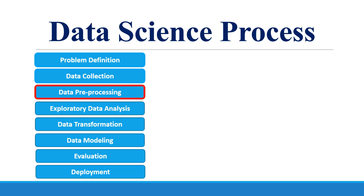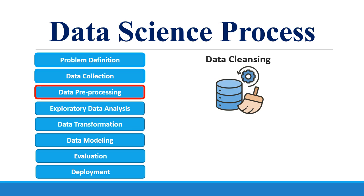Once you collect the data, the next step is data preprocessing, which involves data cleansing. When you collect the data in raw format, there are a lot of inconsistencies and errors in the data. The errors could be missing values, duplicate values, incorrect data types, outliers, and so on. The data cleansing process aims to identify those errors and eliminate and clean the data from those errors.